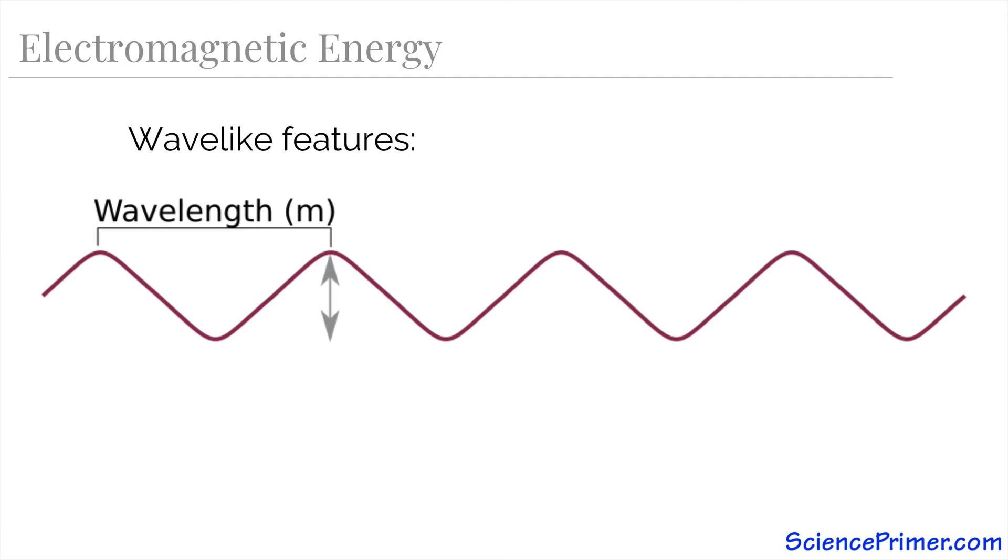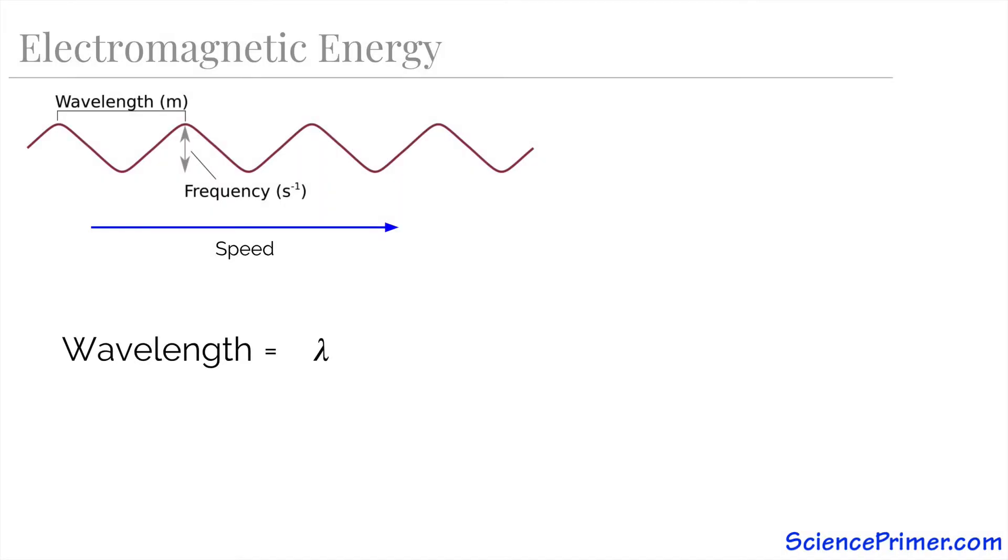The number of times the pattern repeats itself per second is called the frequency, and the rate at which the wave moves through space is its speed. We use the symbol lambda for wavelength, f for frequency, and c for speed.